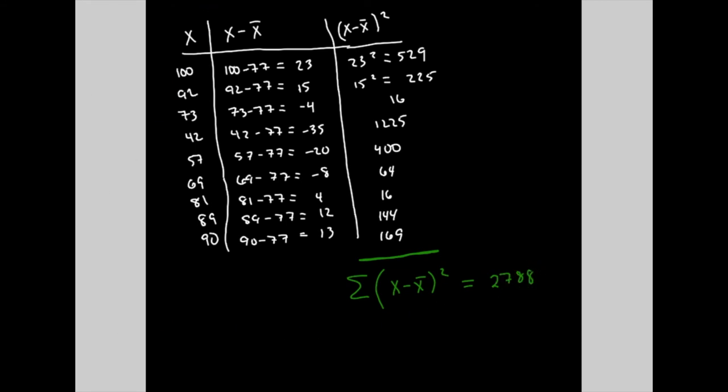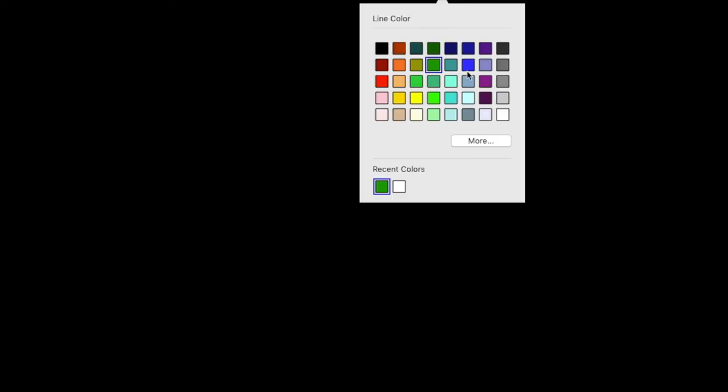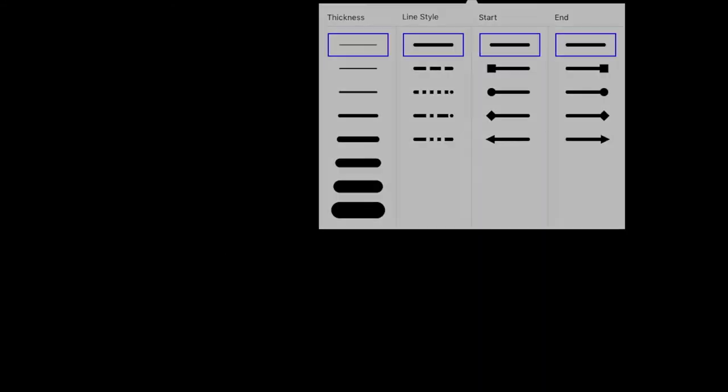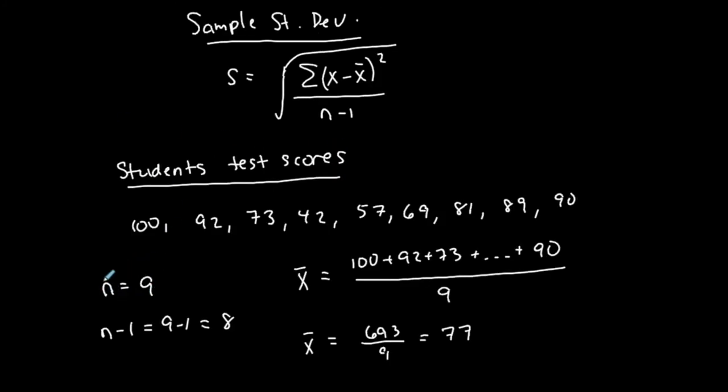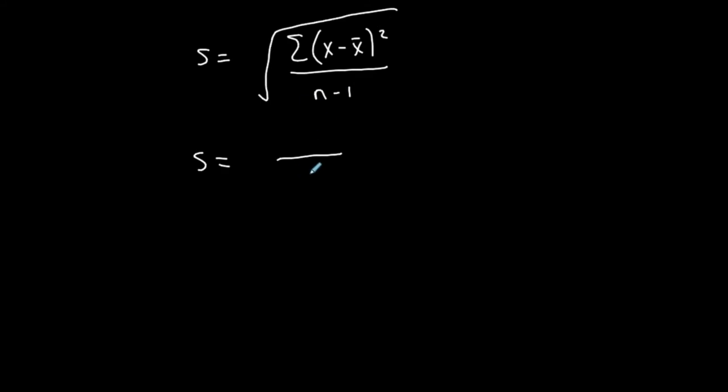Okay, now I'm going to rewrite this formula for sample standard deviation here. Again, it is small s for sample standard deviation is the sum of each value minus the mean squared over n minus 1, where n is the number of values, and then square root that. So what did we determine? Well, we said in the beginning that we have nine data values. n is 9. So n minus 1 would be 8, and that's the denominator of this fraction. So we have the denominator of this fraction 8.